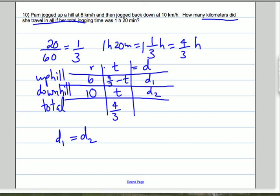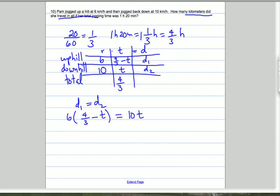So we know that 6 times 4 thirds minus T has to equal 10 times T. We're going to distribute the 6 times 4 thirds. You can either use your calculator or just do it this way - you can reduce this, so that's 8. So we're distributing the 6 to the parentheses here. So that's 8 minus 6T equals 10T.